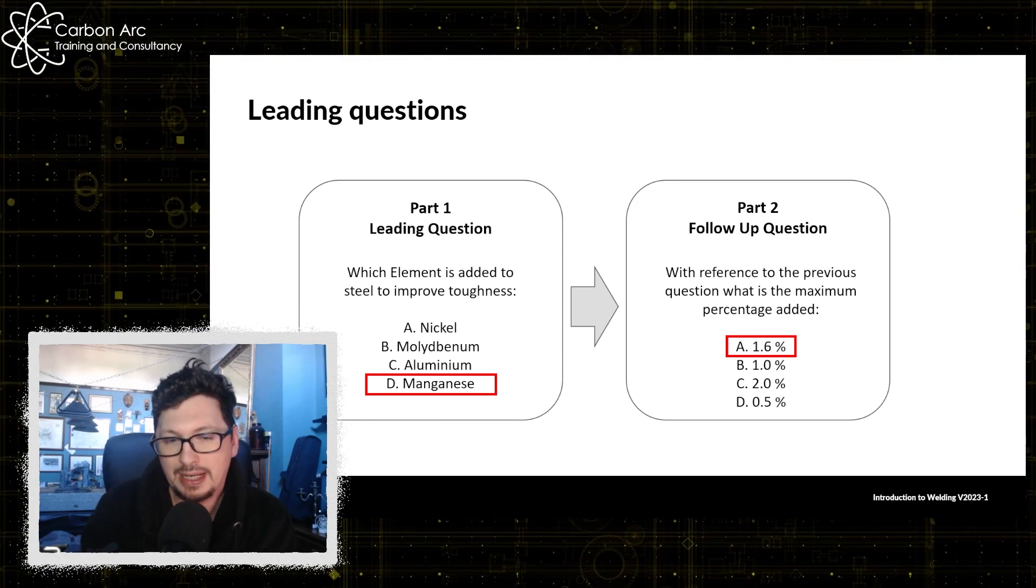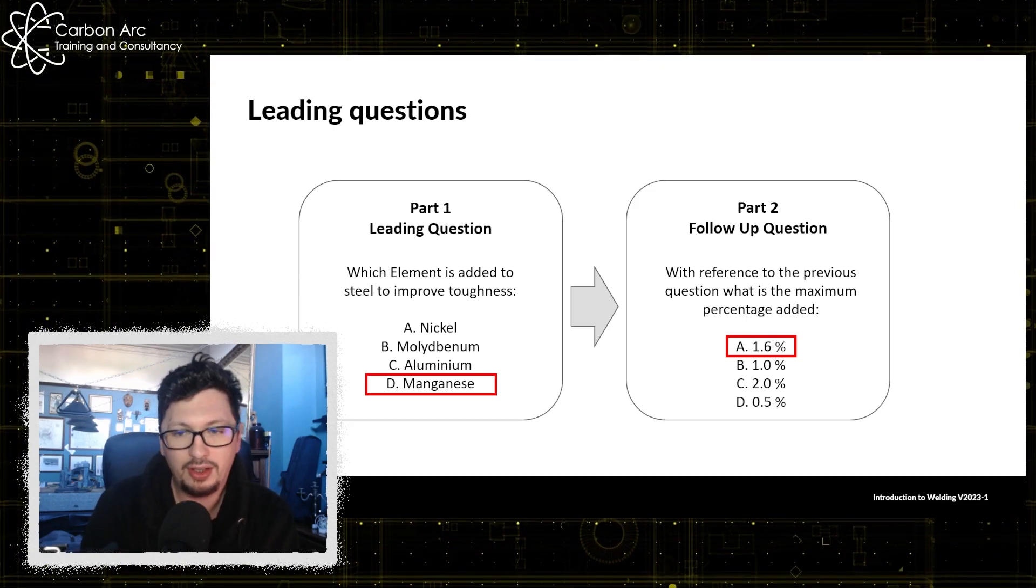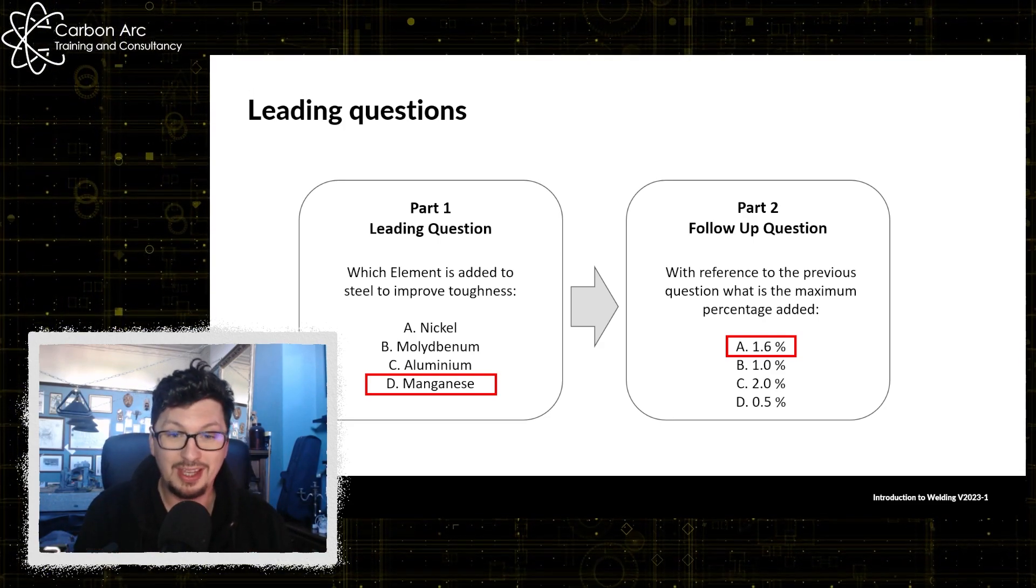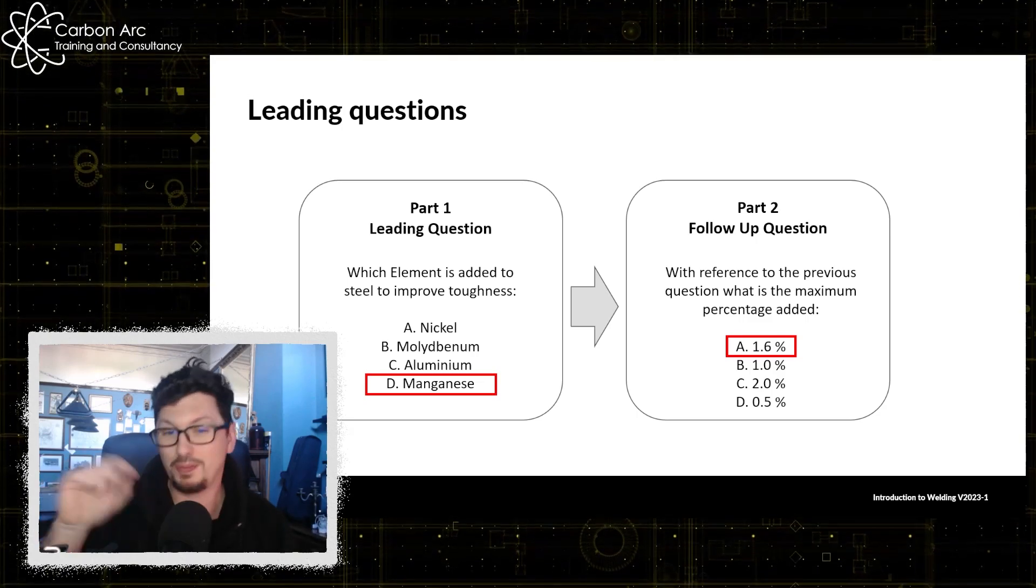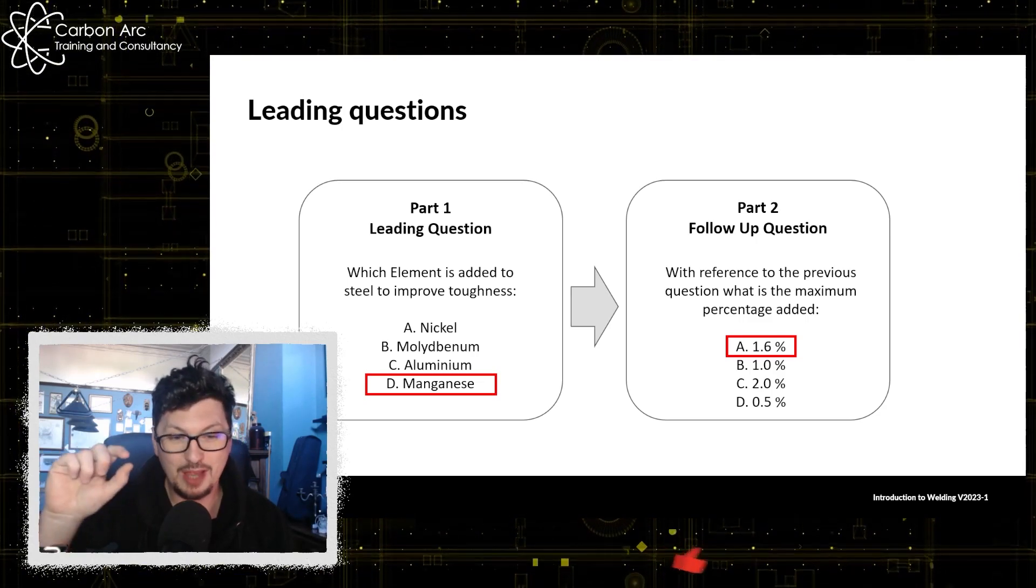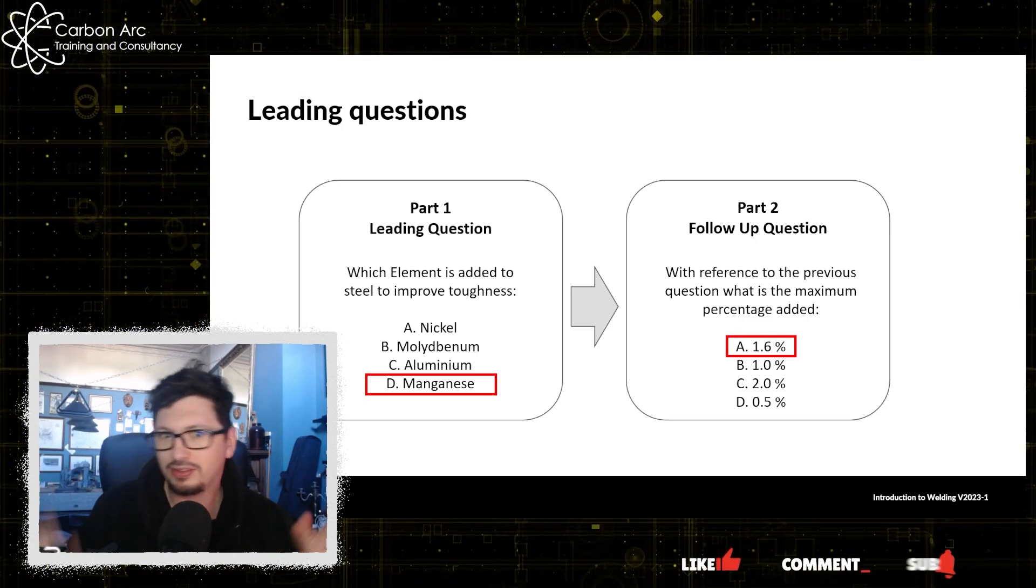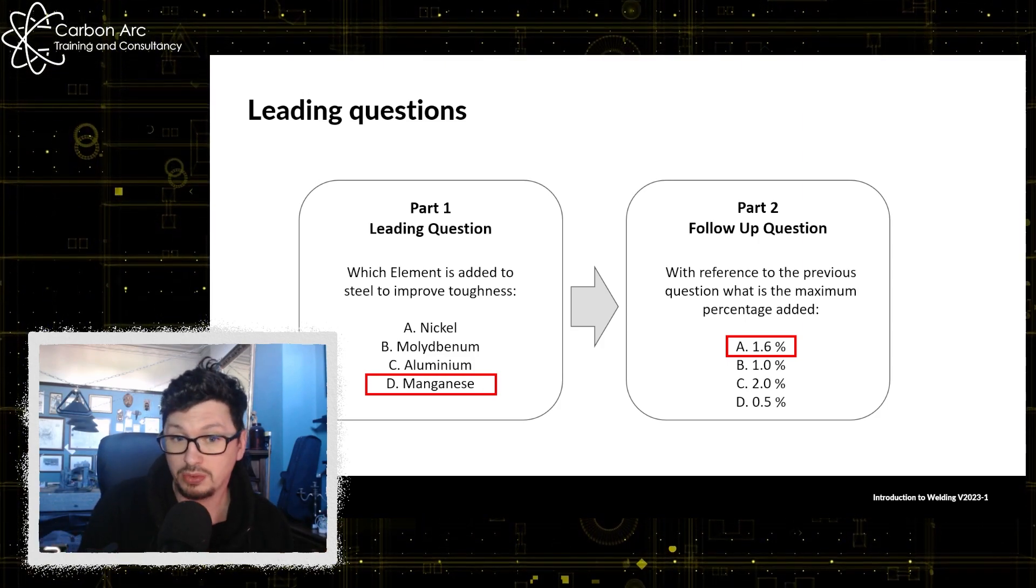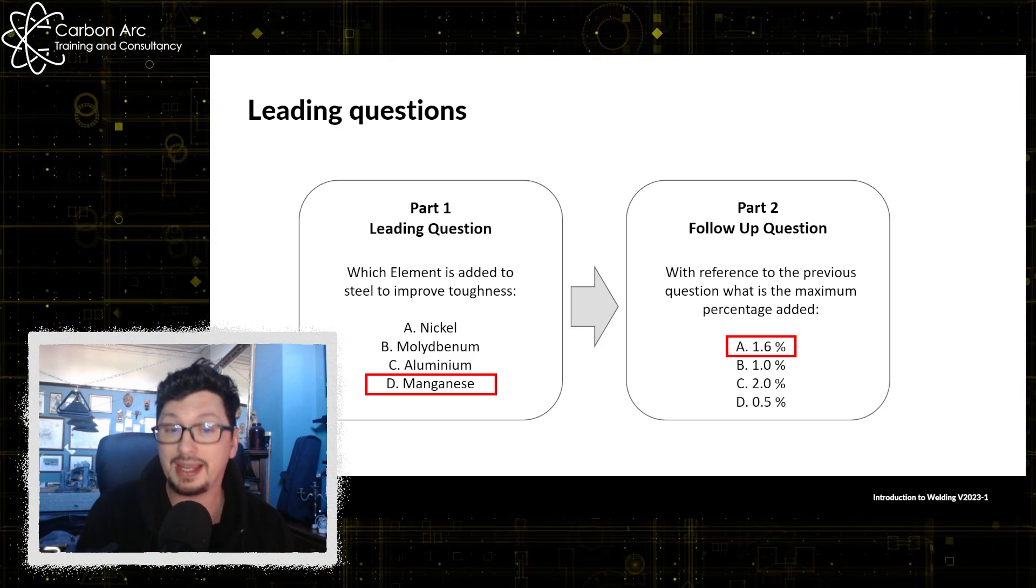And I mean I've picked for this example some random numbers but I would almost expect, you know, if there was a chrome answer there would be percentages for chrome in stainless steel or something in there to kind of catch it out. You're going to have to understand how they're connected.